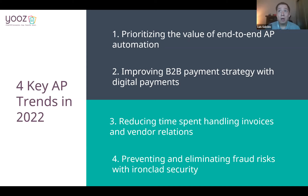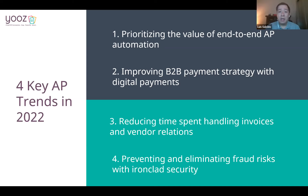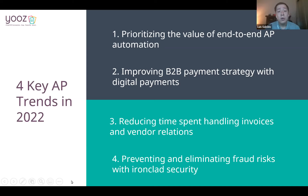The third key point is reducing the time spent handling invoices and vendor relations. The average time to process an invoice is around 12 to 13 days — unchanged from 2021. On average, 29% of the time is spent by users handling supplier inquiries, fixing invoices, processing payment errors, and resolving discrepancies. Invoices processed straight-through touchless is only at 30% this year, which leaves a lot of room for improvement.